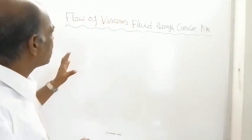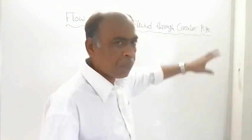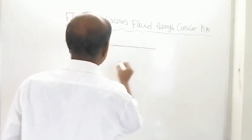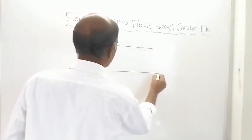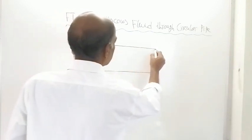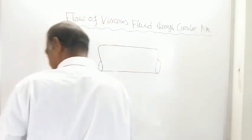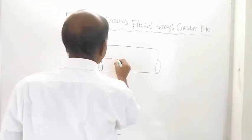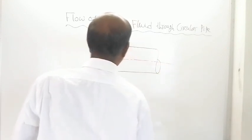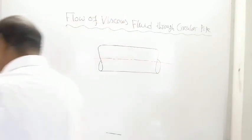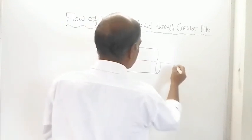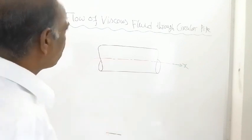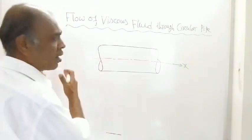We are talking about a circular pipe. Let us draw one circular pipe with its center line. The direction of flow is from left to right.